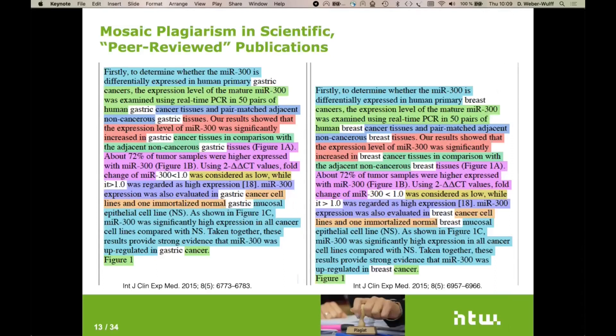I've also found mosaic plagiarism in peer-reviewed publications, or rather this one is I could probably call a copy and paste and search and replace plagiarism. These are two different papers from the International Journal of Clinical and Experimental Medicine, which are in the same issue, actually, of this journal. And they're published by two different research groups at the same Chinese hospital. And the one is about breast cancer and the other about gastric cancer. And all they've done is they've gone through and done a search and replace on the word breast and made gastric out of it. I've had scientists look at the imaging and saying it looks like breast tissue.